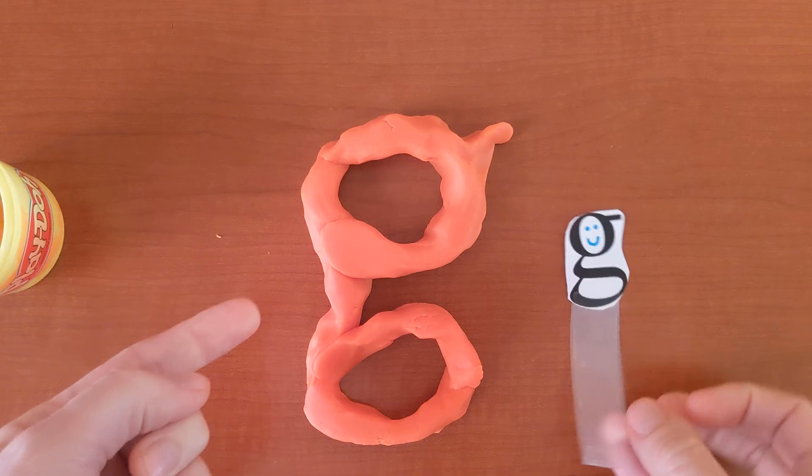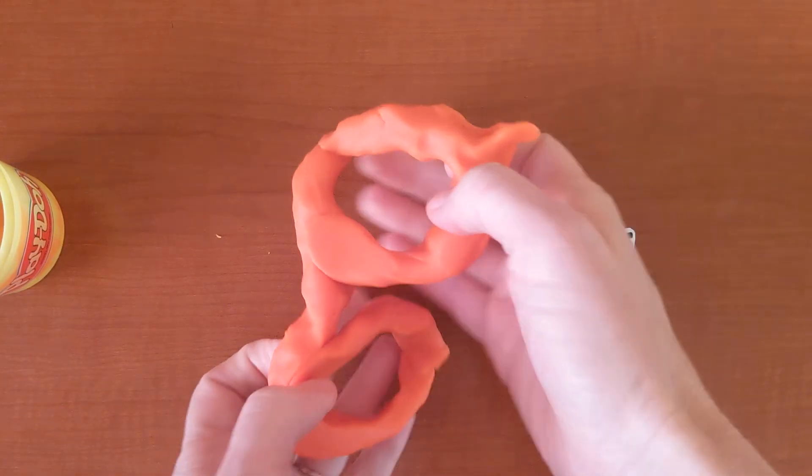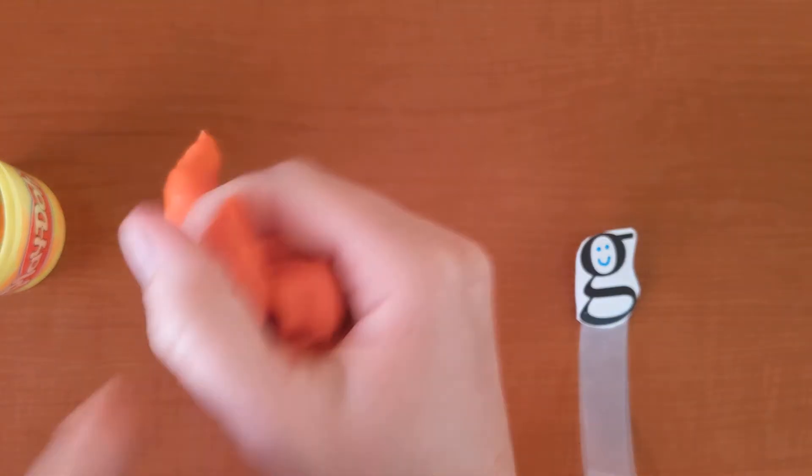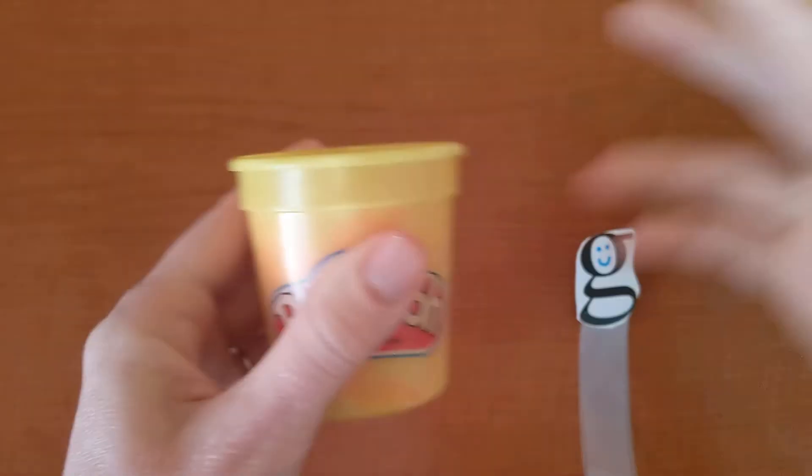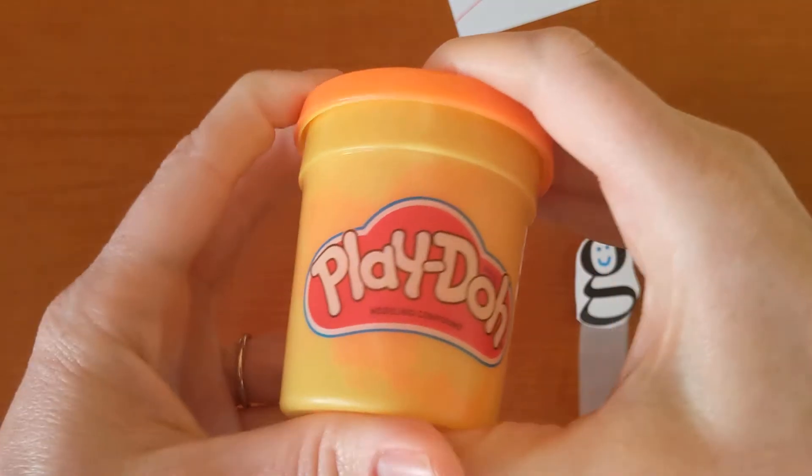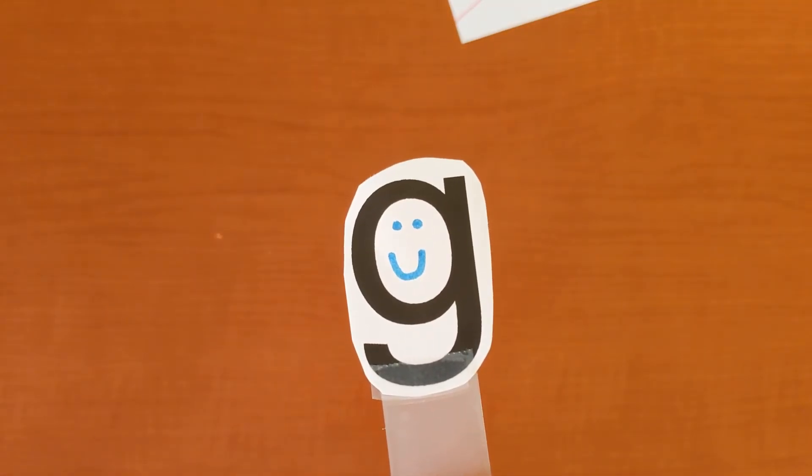What letter is this? Fancy G! All right. Pick up your fancy G and squash it. Nice work! Turn it into an egg shape and stick it into your Play-Doh container. Good work, friends. And put your Play-Doh away. All right. What letter is this? G! What letter is this? G!